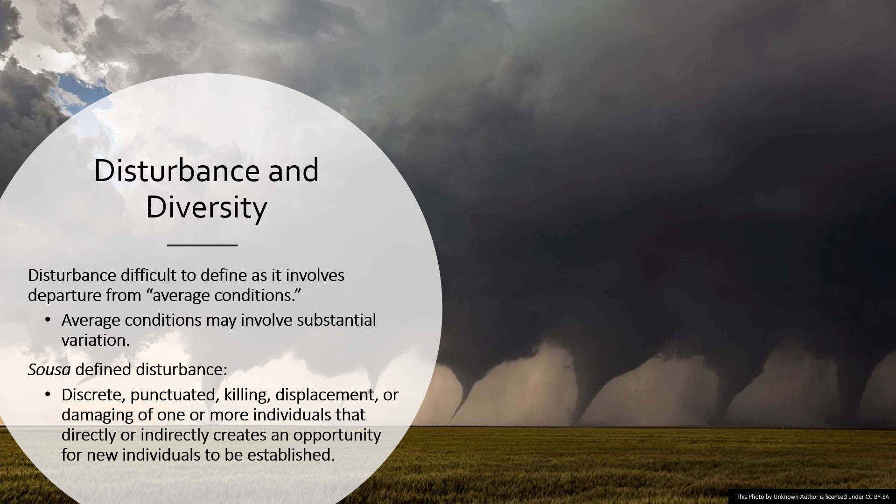Wayne Sousa defined disturbance as a discrete, punctuated killing, displacement, or damaging of one or more individuals that directly or indirectly creates an opportunity for new individuals to be established. That could be a windstorm blowing over trees, which allows new trees to grow there, or a flood that wipes out plants growing along the riverbank and allows new seedlings to get established.